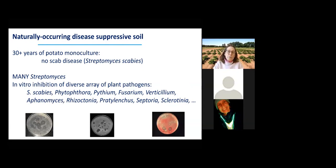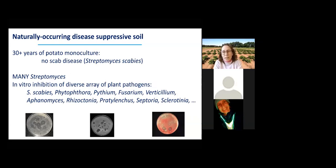There was a plot in northern Minnesota used for the potato breeding program. The potato breeders planted potatoes every year in that field because it had such great disease pressure for scab. They knew if they brought potato cultivars up there, they could get a good assessment of their susceptibility to scab. Unfortunately, after 30 years of potato monoculture, scab disease — caused by the bacterium Streptomyces scabies — began to decline dramatically, and eventually the breeding program could no longer use that soil for the nursery.